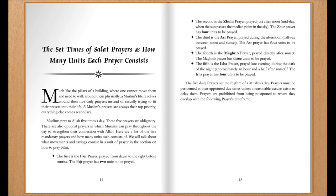The fifth is the Isha prayer, prayed in late evening during the dark of the night, approximately an hour and a half after sunset. The Isha prayer has four units to be prayed.